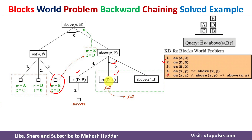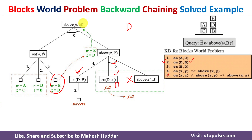Since z is confirmed as d, and going back up the tree w is equivalent to e, this means e is present above b. So d is above b and e is above b — these are the two blocks found above b from this branch of the tree.